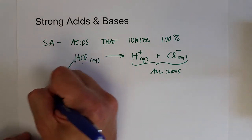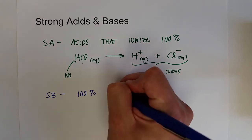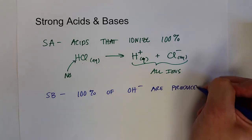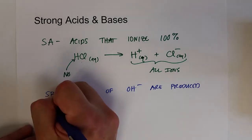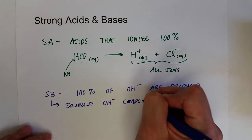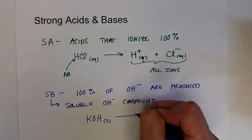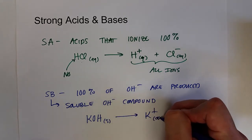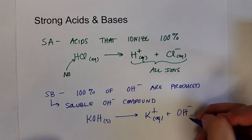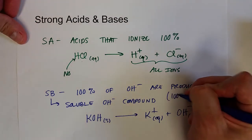Strong bases are the same way — they produce 100% of the hydroxide ions in solution, meaning 100% dissociation. Strong bases are only soluble hydroxide compounds, and those are primarily group 1 and group 2 hydroxide compounds. Potassium hydroxide, for example, is a strong base because when you dissolve it in water it produces 100% hydroxide ions — none of the hydroxide ions stay associated with potassium.